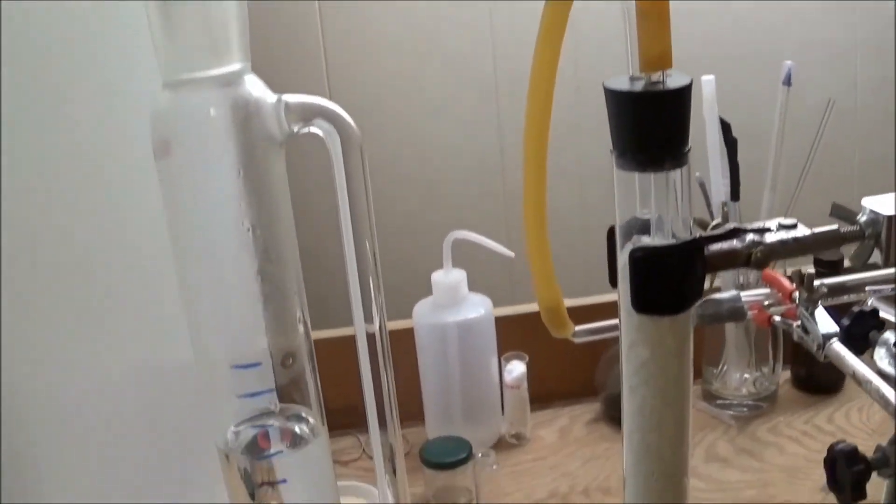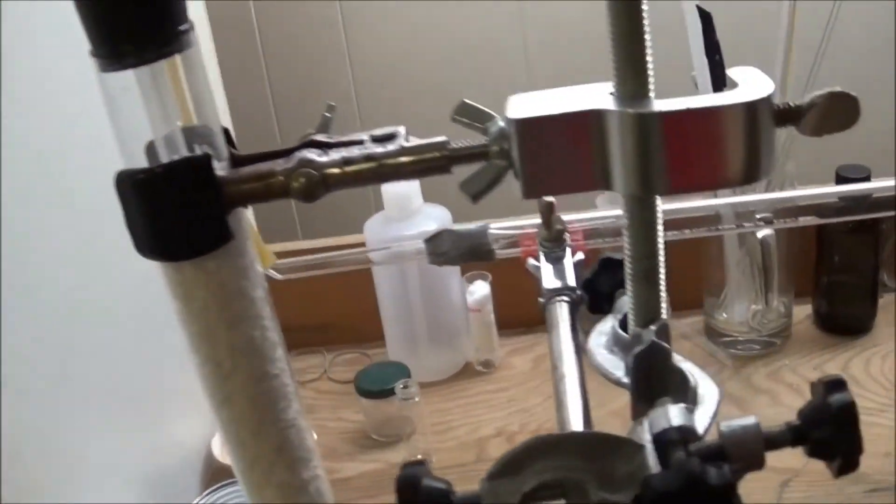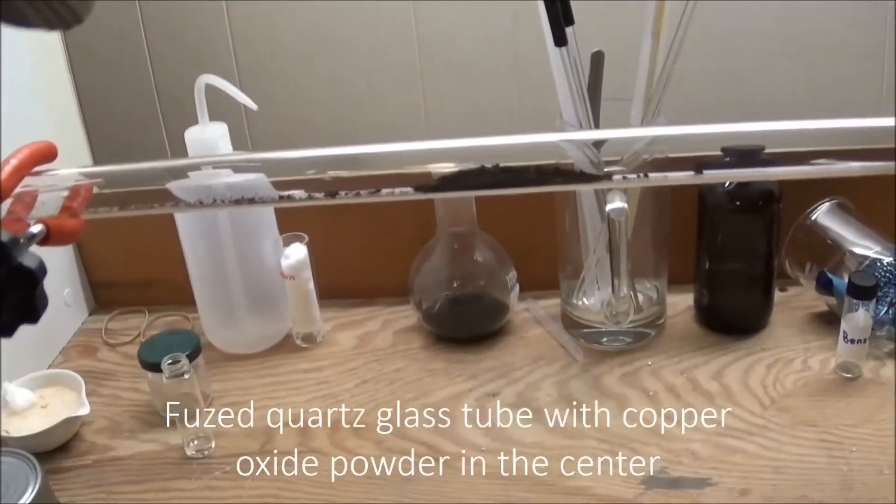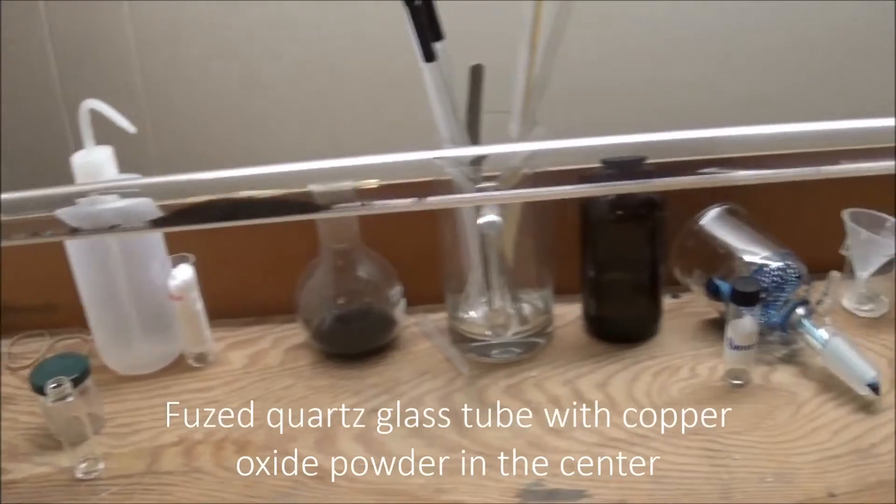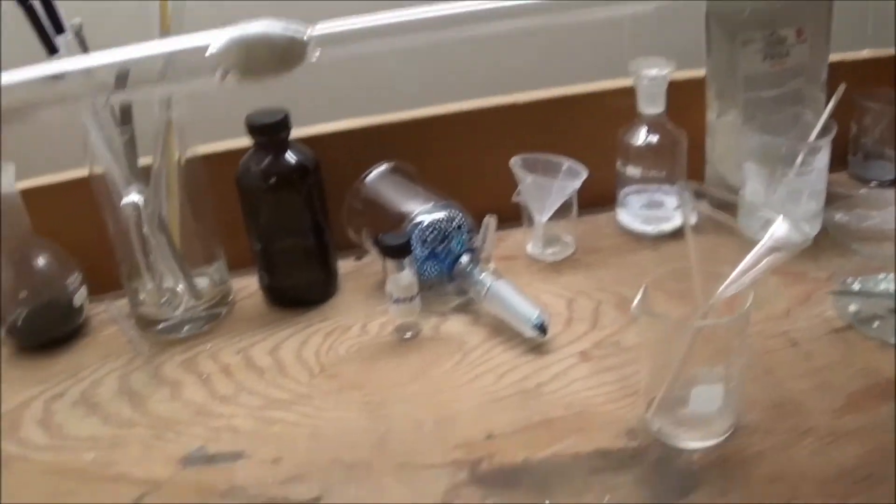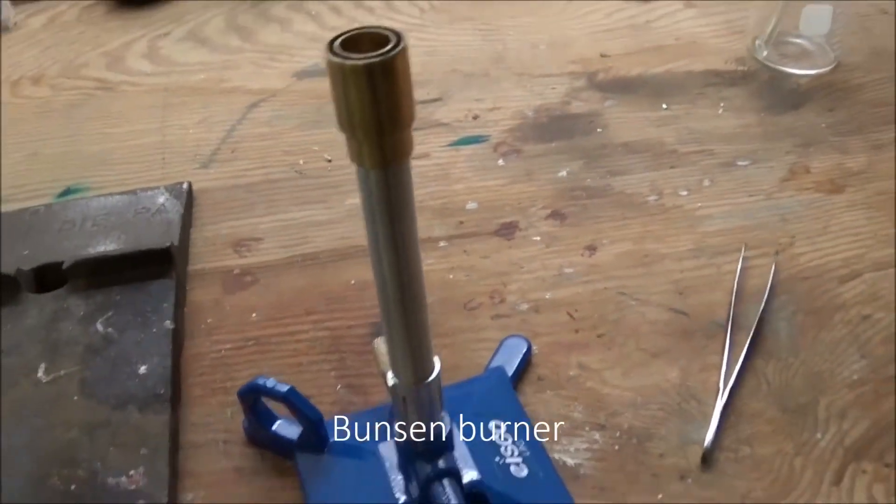After that, tubing leads to a fused quartz tube that has some copper oxide powder in the middle. The tube vents to the atmosphere. I also had a Bunsen burner below the tube.